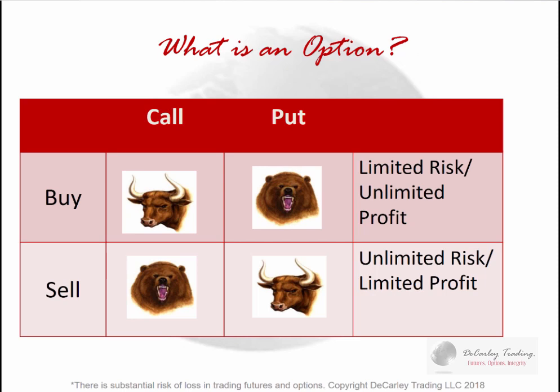If you're bullish and want to trade options outright, you can either buy a call or sell a put. If you're bearish, you could buy a put or sell a call. A lot of beginning traders get stuck thinking puts are bearish and calls are bullish, but they forget that selling a put means something different than buying a put. The big difference between buying and selling an option is: when you buy an option, you have limited risk; when you sell an option, you have unlimited risk.